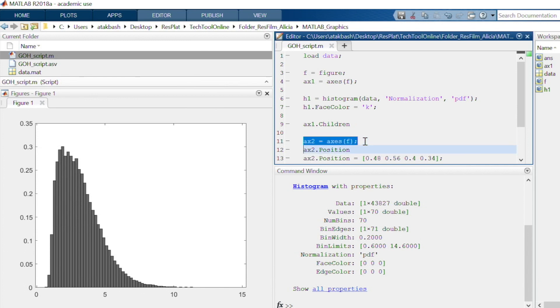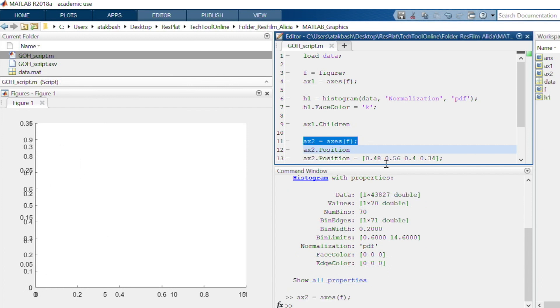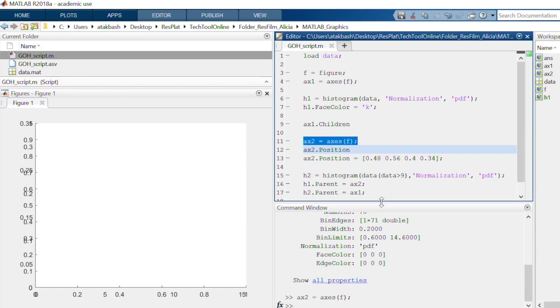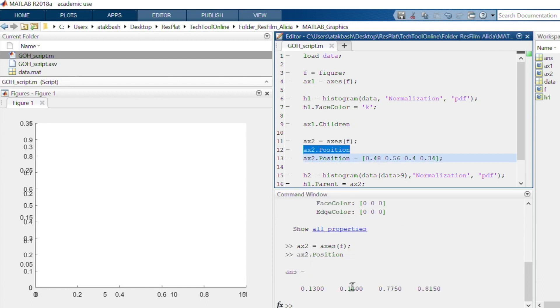Now, I use again the handle of my figure object and the function axis to create a second axis object in f with the handle x2. You can see that x2 is now overlaying x1. Therefore, I need to access its position property using its handle and modify its position and size.